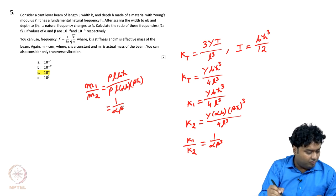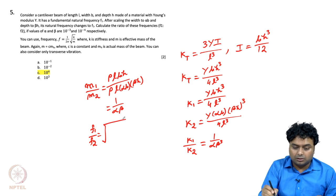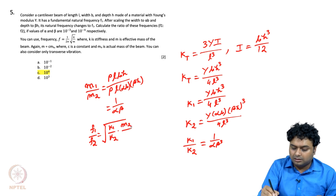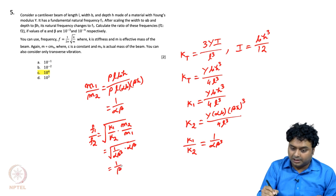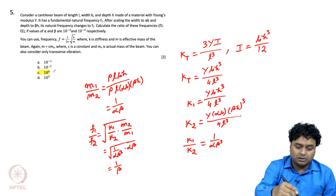The frequency ratio f₁/f₂ equals square root of (k₁/k₂ × m₂/m₁), which equals square root of (1/(alpha·beta³) × alpha·beta) = square root of (1/beta²) = 1/beta. Since beta was given as 10 to the power minus 4, then 1/beta equals 10 to the power 4. So the correct answer is option 3.